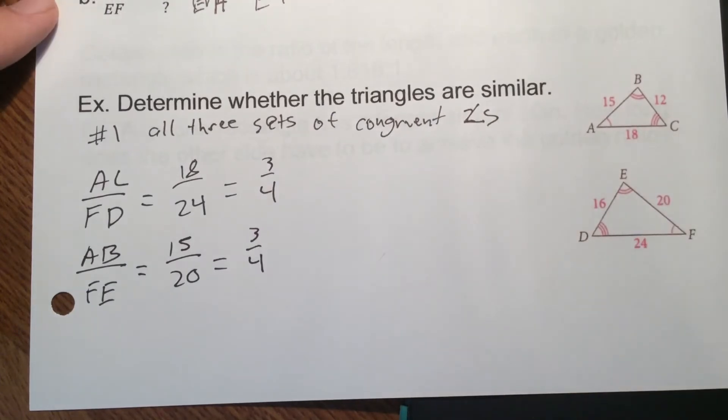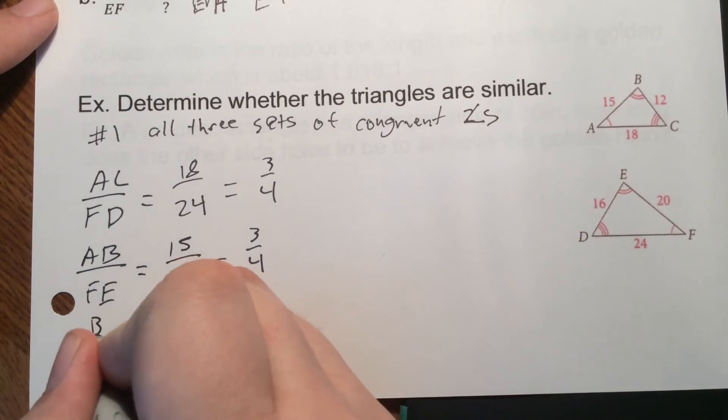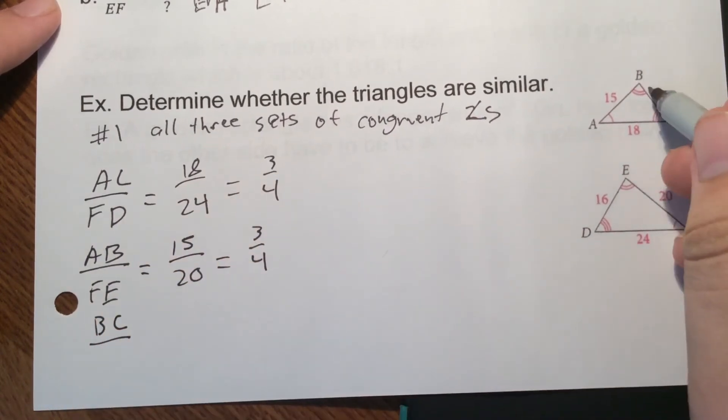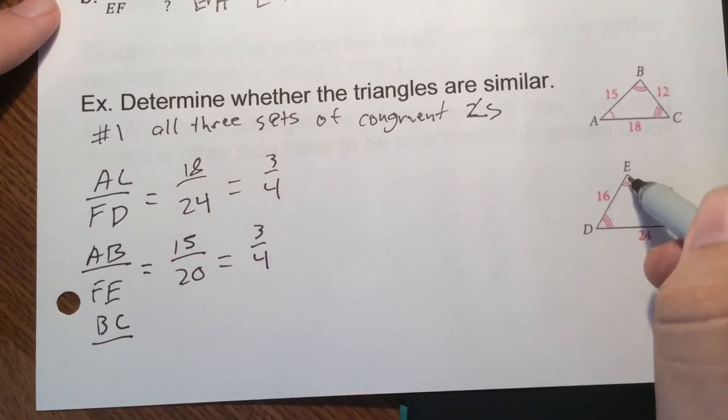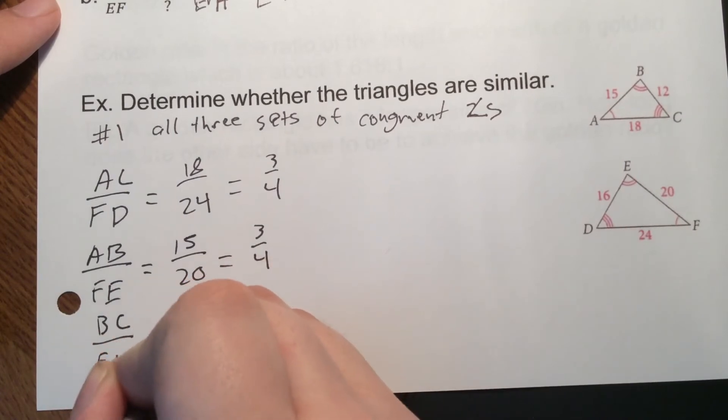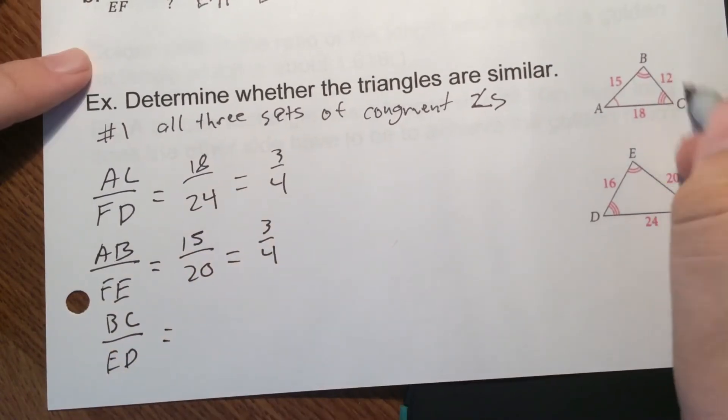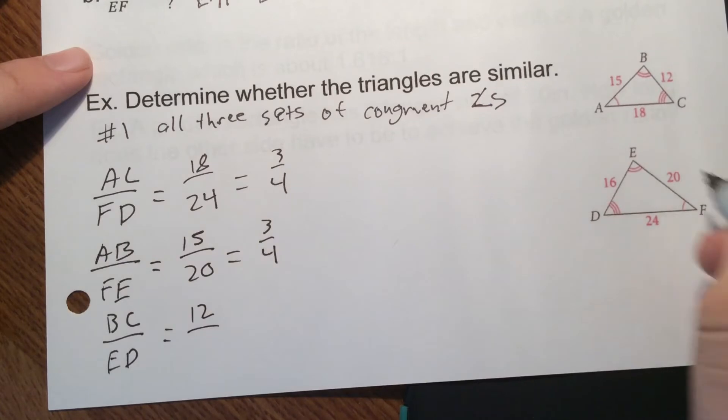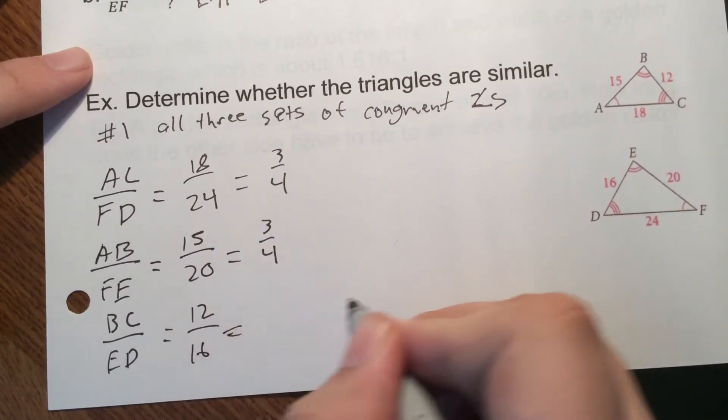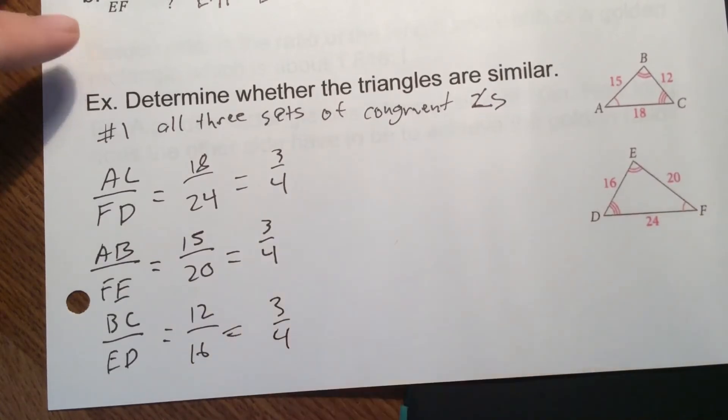So our last set of sides. So we've done AC, AB, we have BC left. BC is the double to the triple. So double to the triple would be ED. So BC is 12. ED is 16. And again, if we reduce that, we're going to get our three fourths. So this is golden. This is what we want. So our sides are proportional.